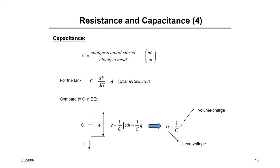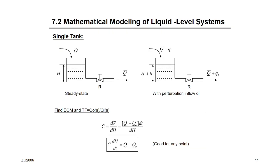One more thing before modeling: we need to define capacity for any tank. Capacity is the change in liquid stored over the change in head: C = dV/dH. Dividing volume by head leaves the cross-sectional area, so for any tank the capacity is simply the cross-sectional area. Integrating gives H = (1/C)·V. There is analogy here too: volume is analogous to charge and head is analogous to voltage, just as in an electrical system.